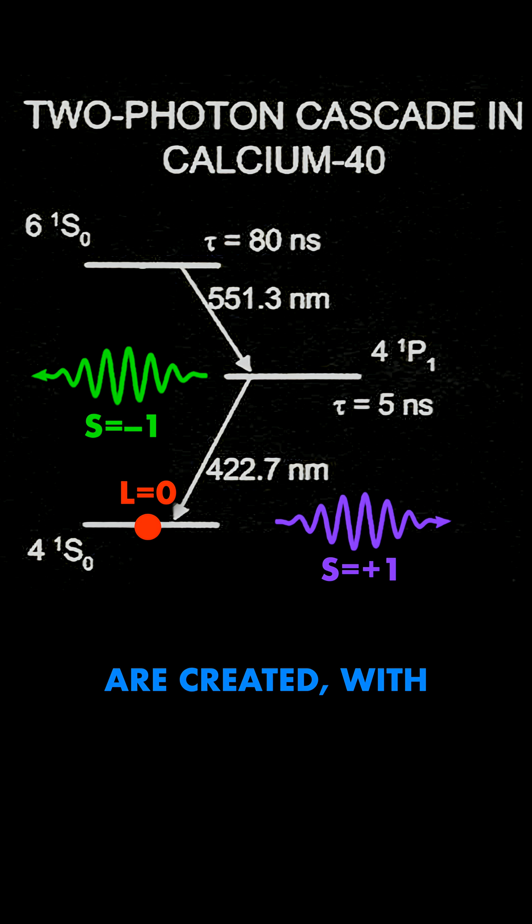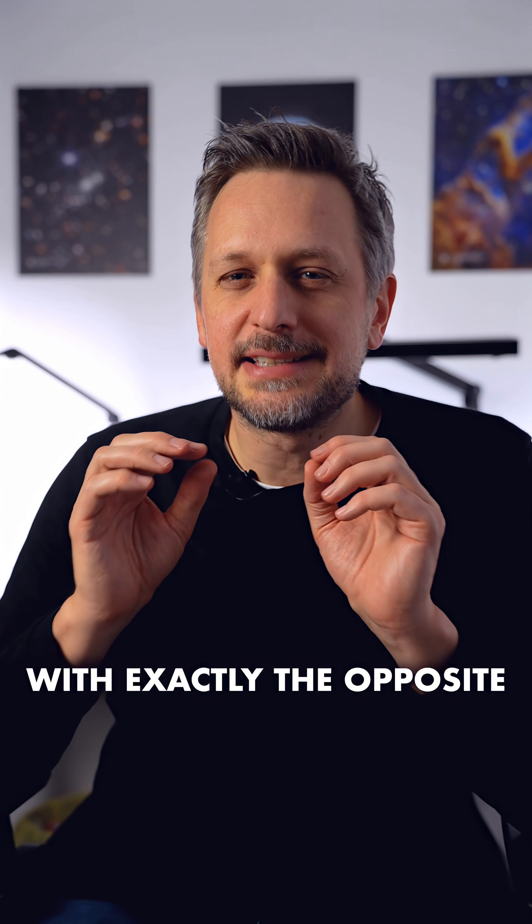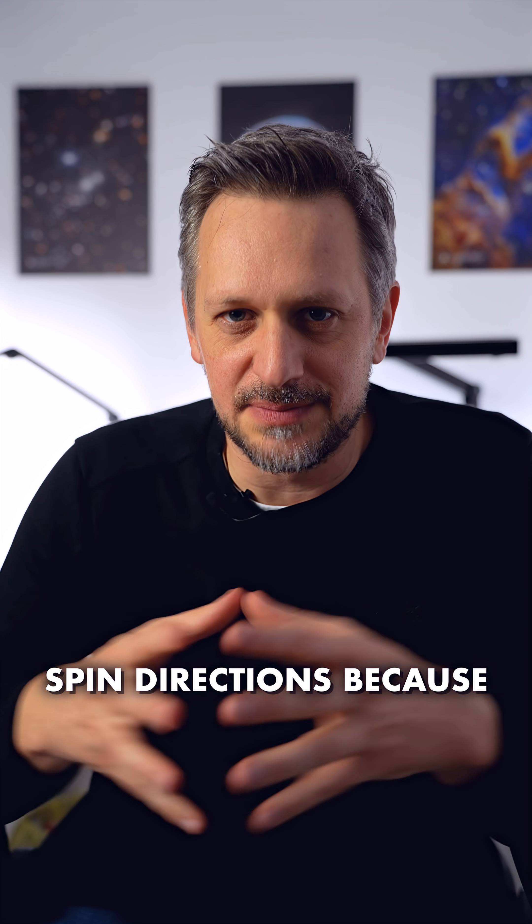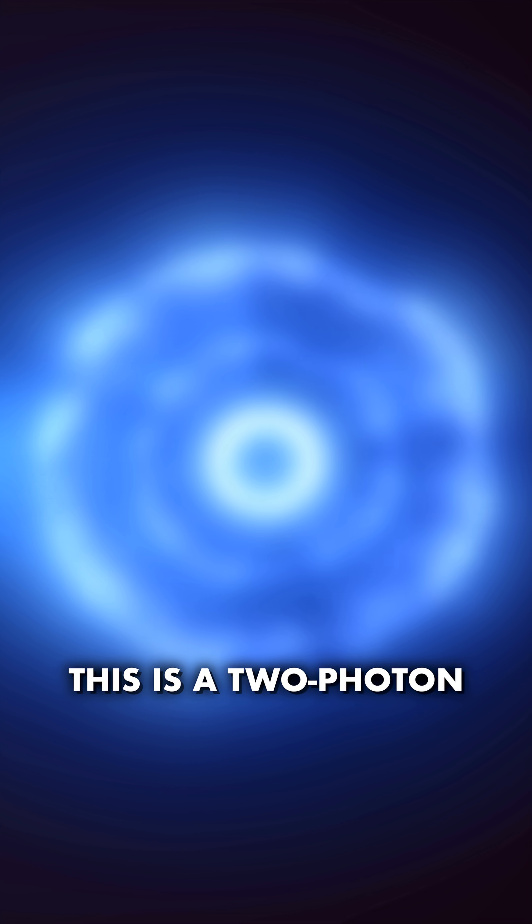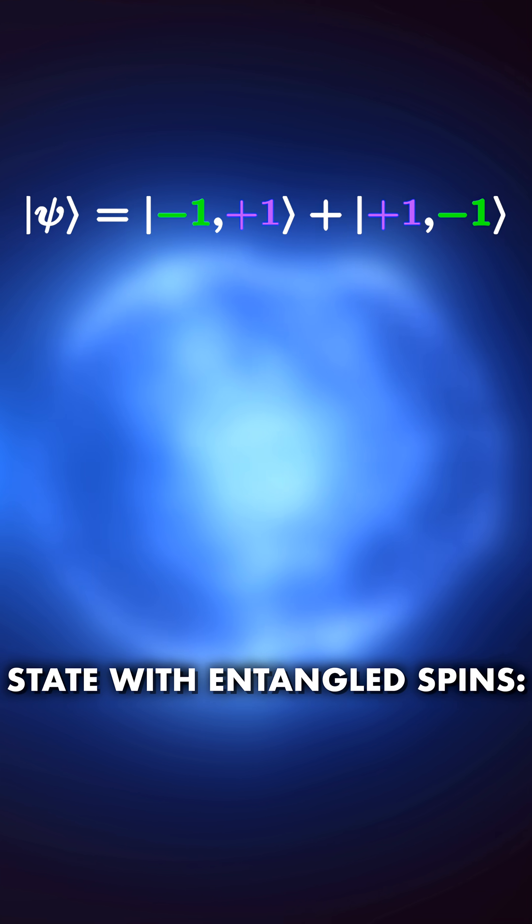This way, two photons are created, with just 5 nanosecond time delay. And more importantly, with exactly the opposite spin directions because of the transitions they went to. This is a two-photon state with entangled spin.